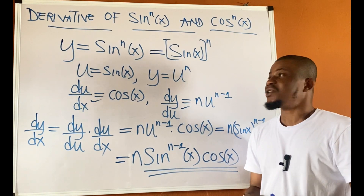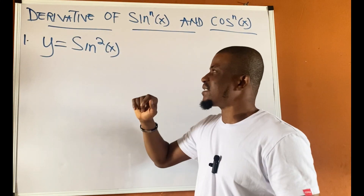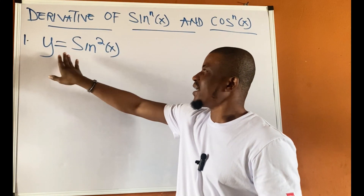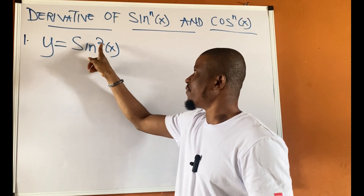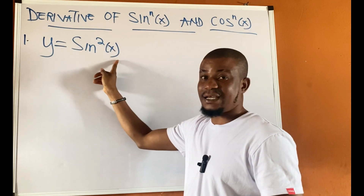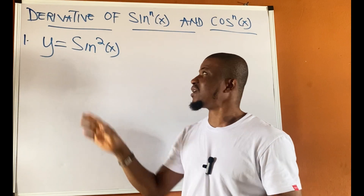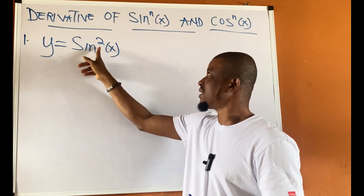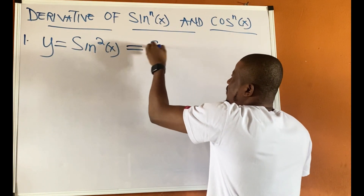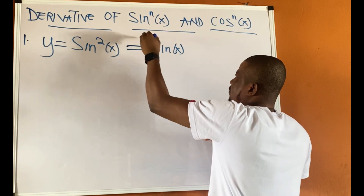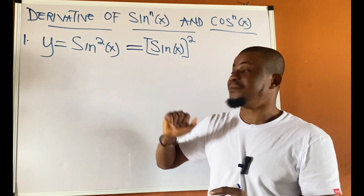Let's look at some examples to better understand how to differentiate this function. We have y equal to sine squared x — sine to the power of 2 of x. To differentiate this function, it is best we rewrite it as a chain function, taking this power up. So this would be sine x to the power of 2.